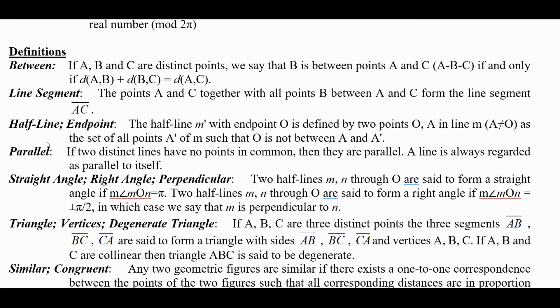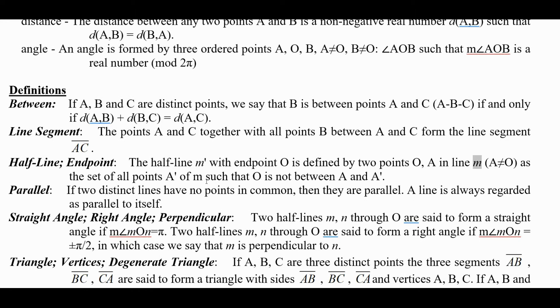A half-line and endpoint: the half-line M' with endpoint O is defined by points O and A in the line M where A is not O as the set of all points A' of M such that O is not between A and A'. So he's able to use betweenness to get to that.